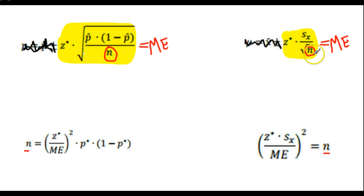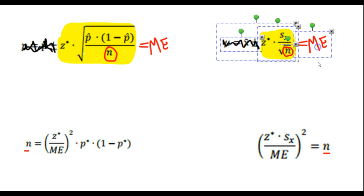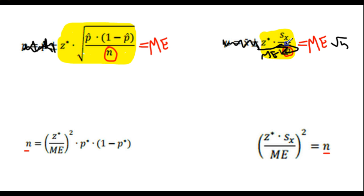If you were to multiply both sides by the square root of n, you would have margin of error times the square root of n on one side. Z star times standard deviation on the other. Get that over there. Divide both sides by the margin of error and it would end up on the bottom over here. And then you square both sides and you end up with this equation right here.